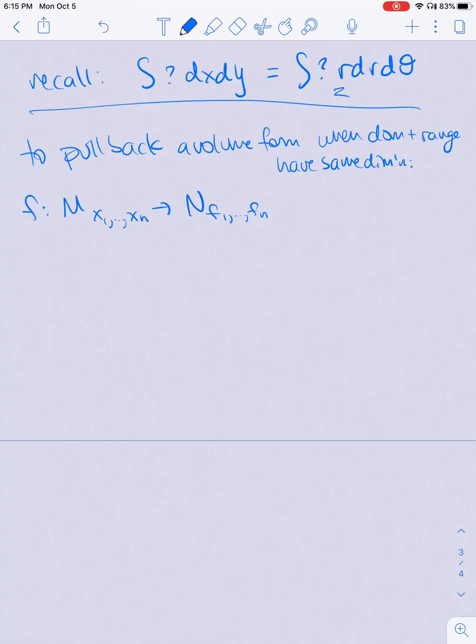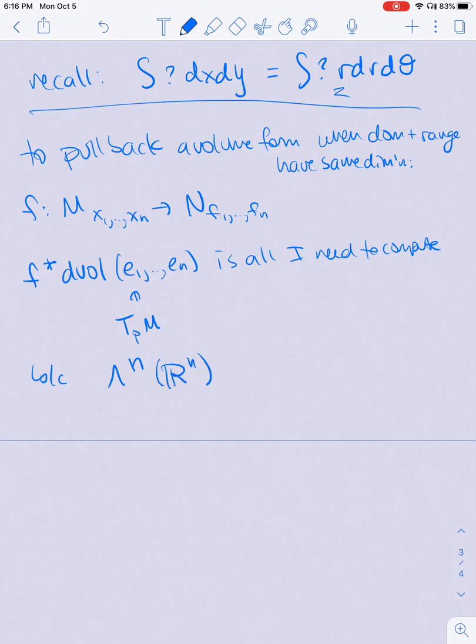I'm using coordinates x on m and f on n, so all I need to compute is what the pullback of the volume form on n does at e₁ through eₙ, where these are elements of the tangent space to a point of m. That's because the top level forms on R^n are just spanned by a single form, dx₁ wedge all the way out to dxₙ. So basically I just need to compute what the coefficient is here.